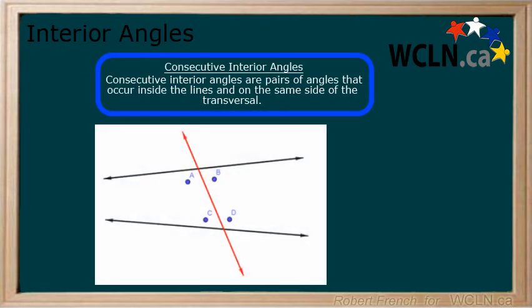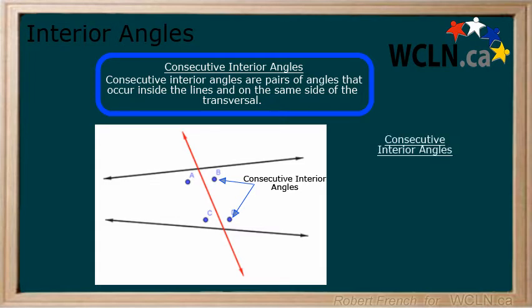Consecutive interior angles are angles that occur inside the lines crossed by the transversal line and on the same side of the transversal line. Here we have two pairs of consecutive interior angles: A and C, and B and D.